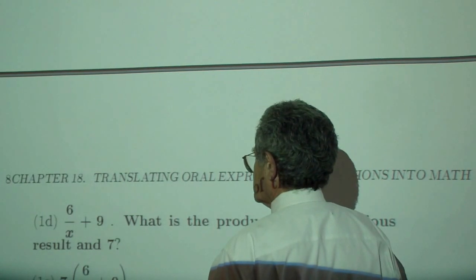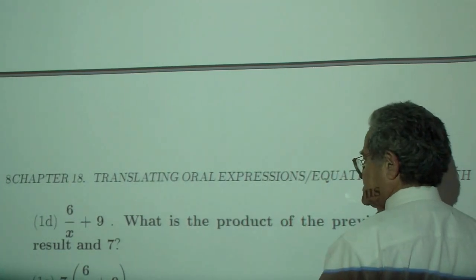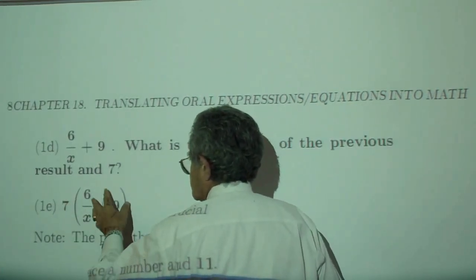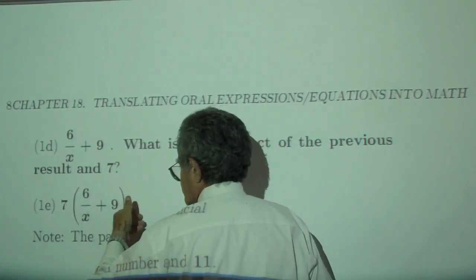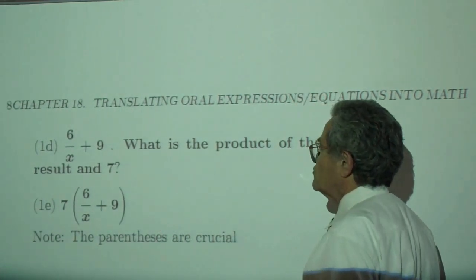And then, what is the product of the previous result and 7? Product means multiplication of the previous result and 7. You can put the 7 at the end, although most people wouldn't. Parentheses here are crucial.